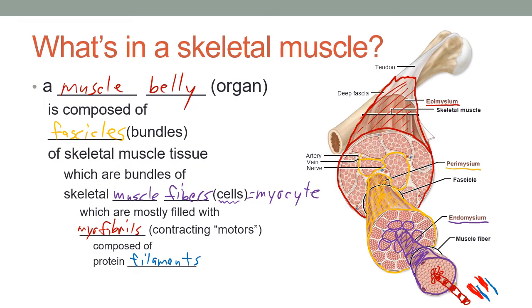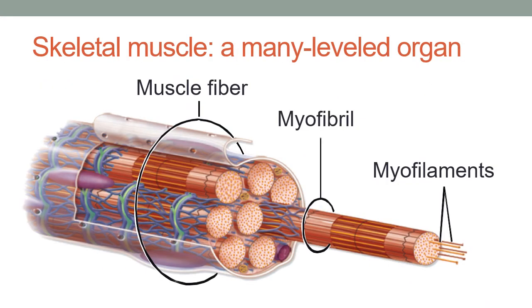Going from gross to micro, each of those muscles that we've learned in our class so far, the biceps brachii or the sternocleidomastoid, all of them have at least one muscle belly to them. That muscle belly can be broken down into fascicles, and those fascicles are bundles of muscle fibers. And if you look inside a muscle cell, you'll find that it's a bundle of myofibrils, which break down into protein filaments.